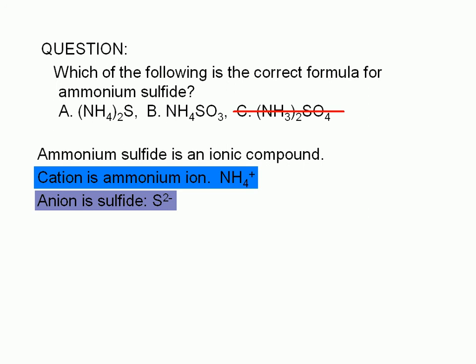and so the formula for the sulfide is S with a negative 2 charge. At this point, we can eliminate choice B. There is no oxygen in this formula because there is no oxygen in ammonium and there is no oxygen in sulfide either,